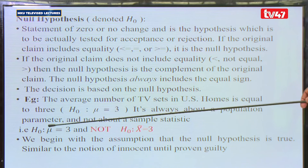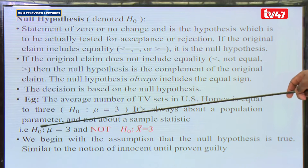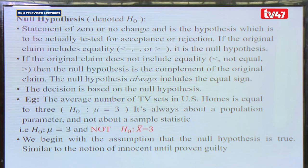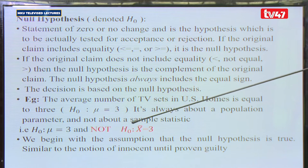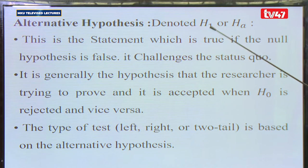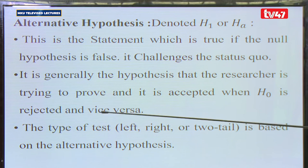So the null hypothesis is that the mean number of TV sets in every US household is 3, and the alternative is that it is not equal to 3. We begin with the assumption that the null hypothesis is true — similar to the notion of innocent until proven guilty. The alternative hypothesis, denoted H₁ or HA, is true if the null is not true. It is generally what the researcher is trying to prove, and it is accepted when the null is rejected. The type of test — left, right, or two-tailed — is based on the alternative hypothesis.